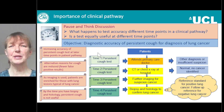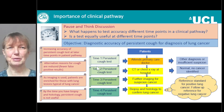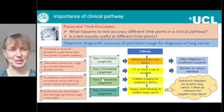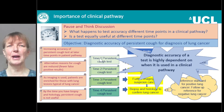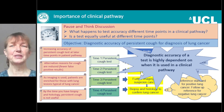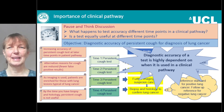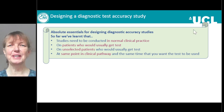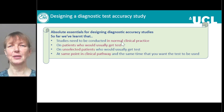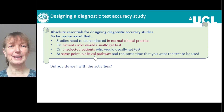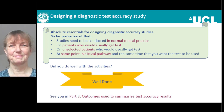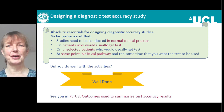What you can see is that as we go through these time points, we get increasing accuracy of persistent cough as a test, but actually decreasing relevance. It would probably only be at time point one where it might be a useful test. What I hope you've had a chance to think about is that diagnostic test accuracy is highly dependent on when it's used in the clinical pathway. To recap: when designing these studies, they need to be conducted in normal clinical practice, on patients who would usually get the test — unselected patients — and at the same point in the clinical pathway. Well done, and see you in part three: the outcomes used to summarize test accuracy studies.